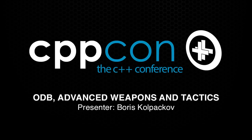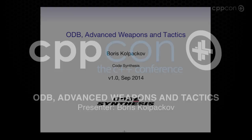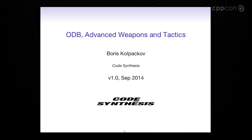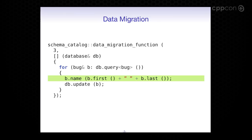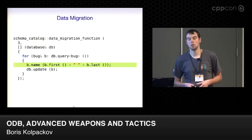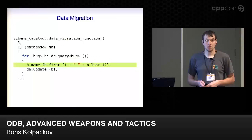Let's continue with our second half where we are going to see what we can do when the pure object-oriented approach doesn't quite work. We had this problem with schema evolution — we deleted some data members but still want to access the data in our data migration function. The data is still in the database because we haven't dropped the columns yet. So how can we solve that? Any ideas, any suggestions?